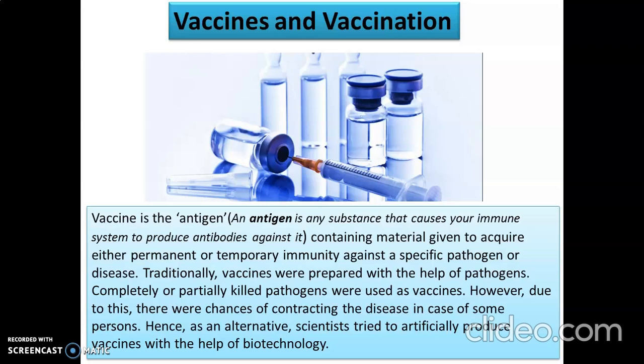Vaccine is an antigen-containing material given to acquire either permanent or temporary immunity against a specific pathogen or disease. Pathogen means disease-causing microorganism. Traditionally, vaccines were prepared with the help of completely or partially killed pathogens injected into the body. However, there were chances of contracting the disease in some persons, because injecting pathogens — even in a dead state — may not act accurately for a specific person. So scientists tried to find an alternative.